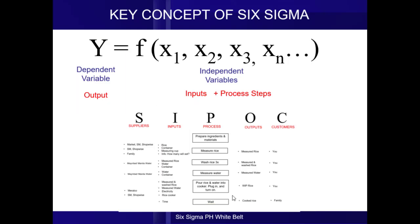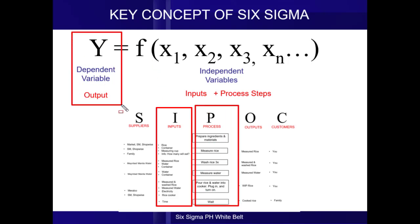How about, let's say, you have complete and correct specifications of the inputs, but you didn't follow the correct process. Will you attain the desired Y, or the desired output? Again, the answer is, no.